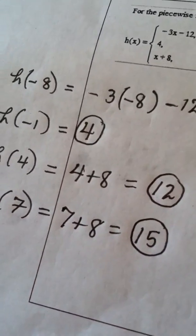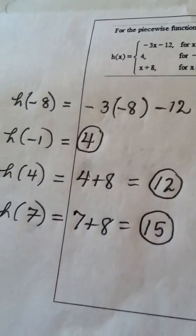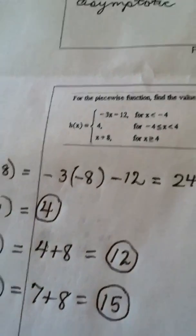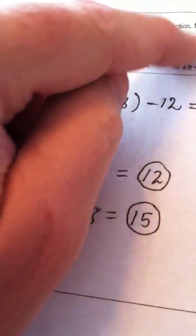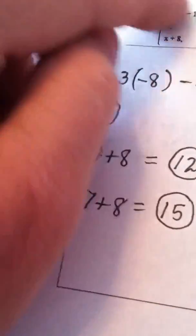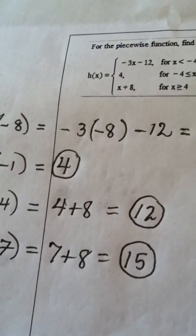So the key to a piecewise function is just paying attention to where the input, which tier the input takes you to, to know which function, which definition to use to evaluate the output. And we're done.